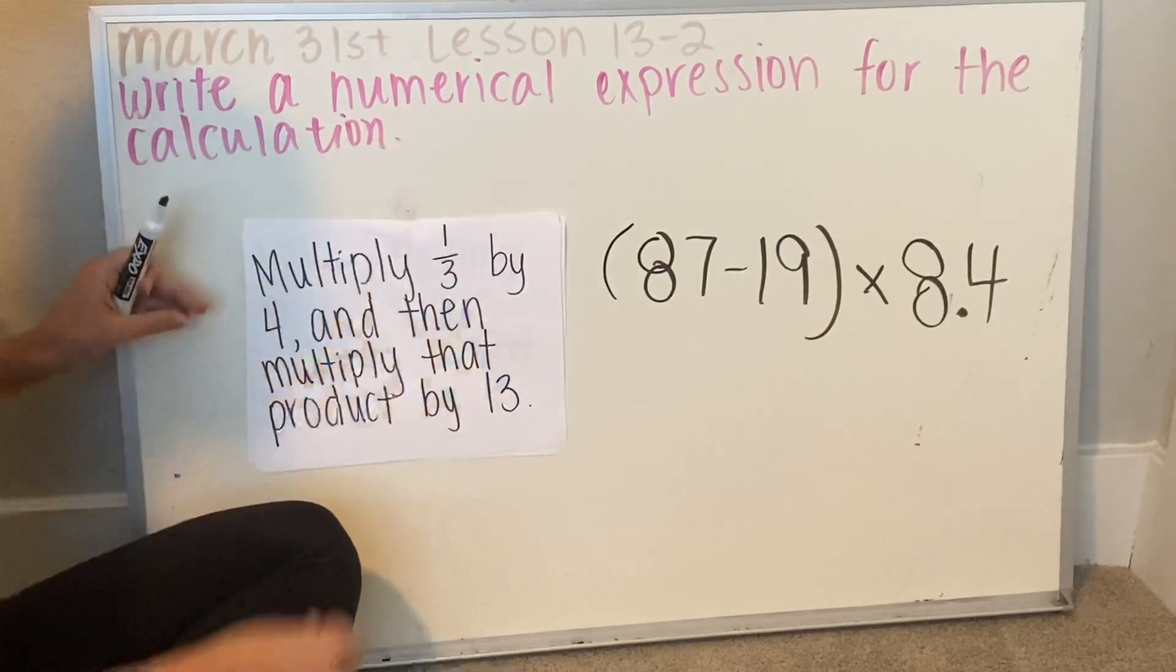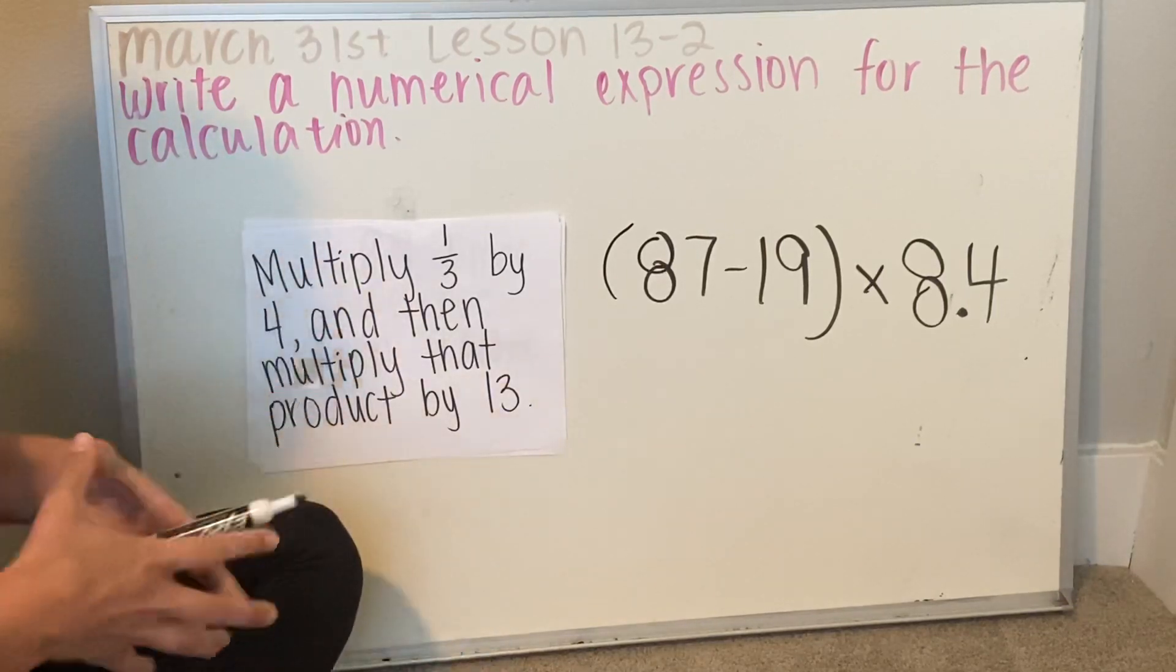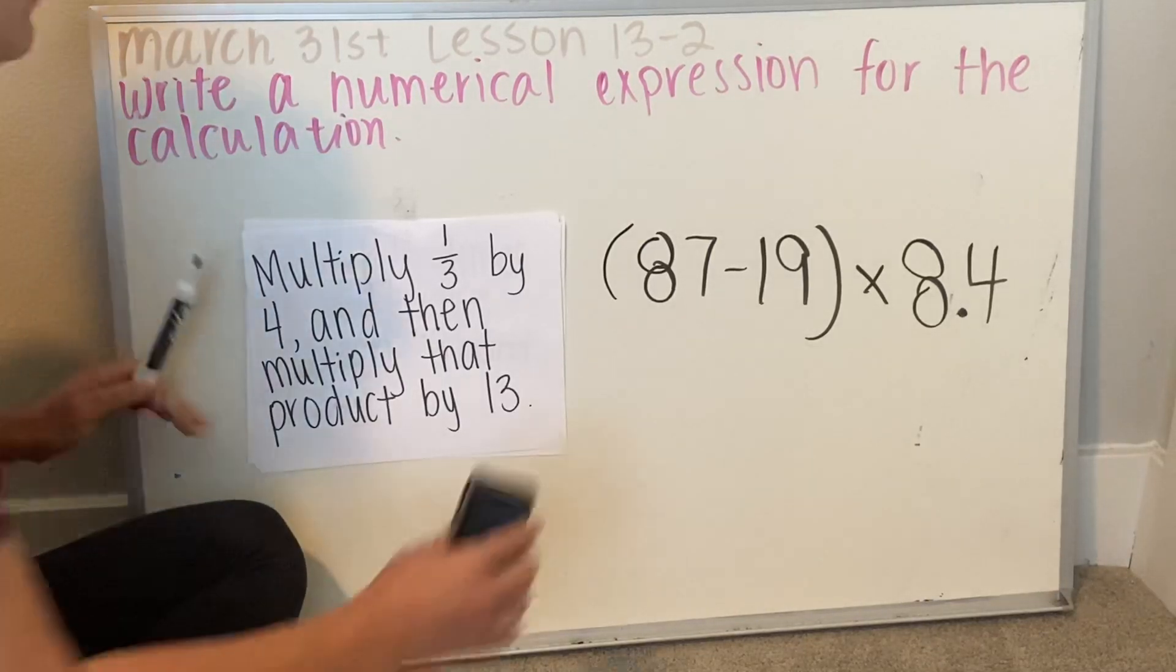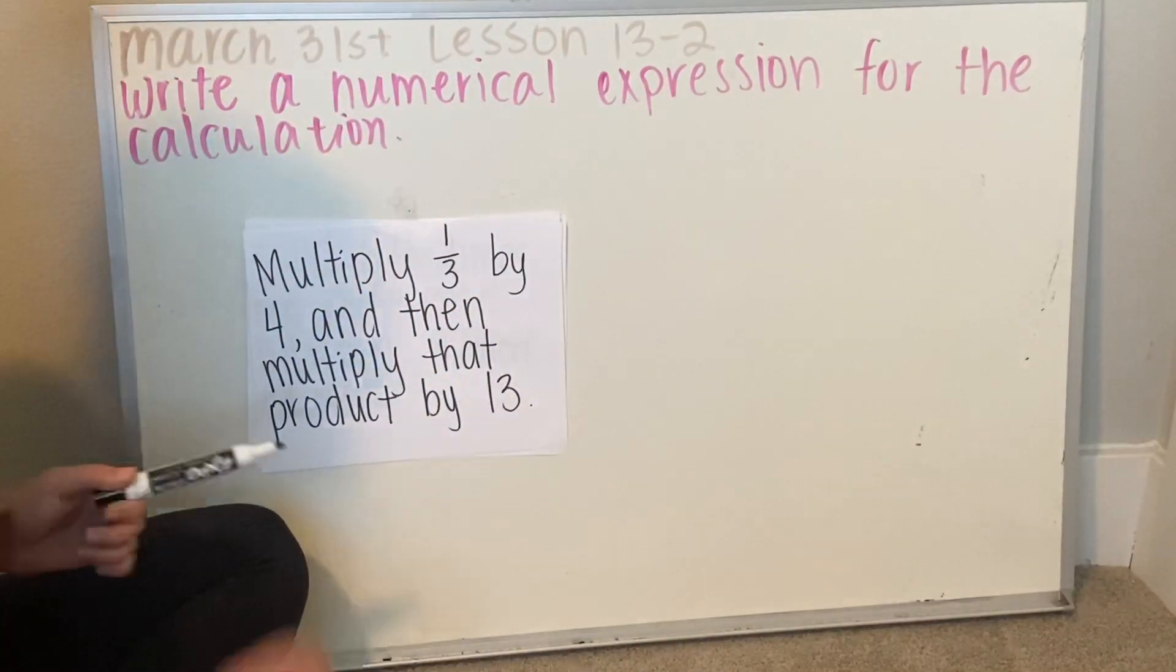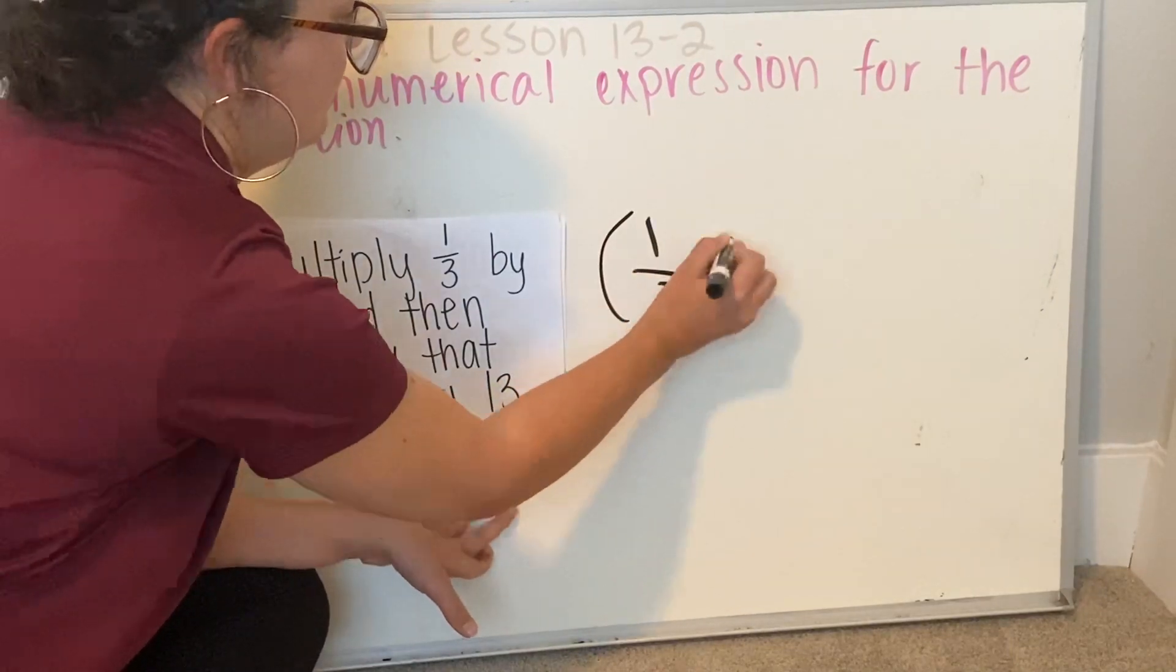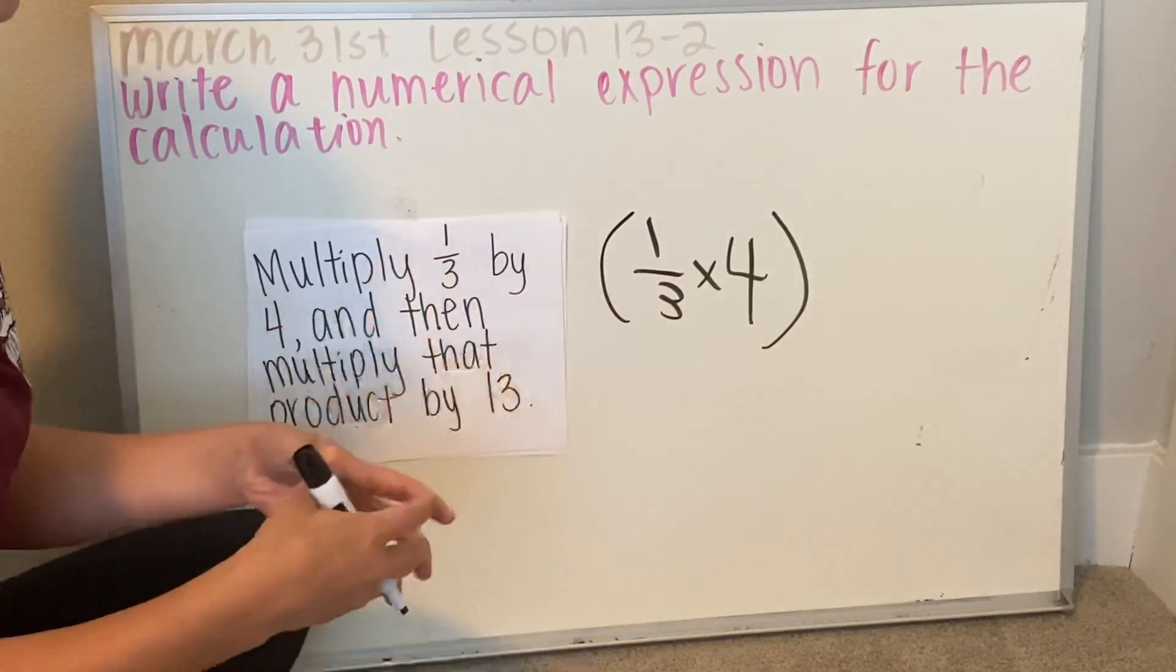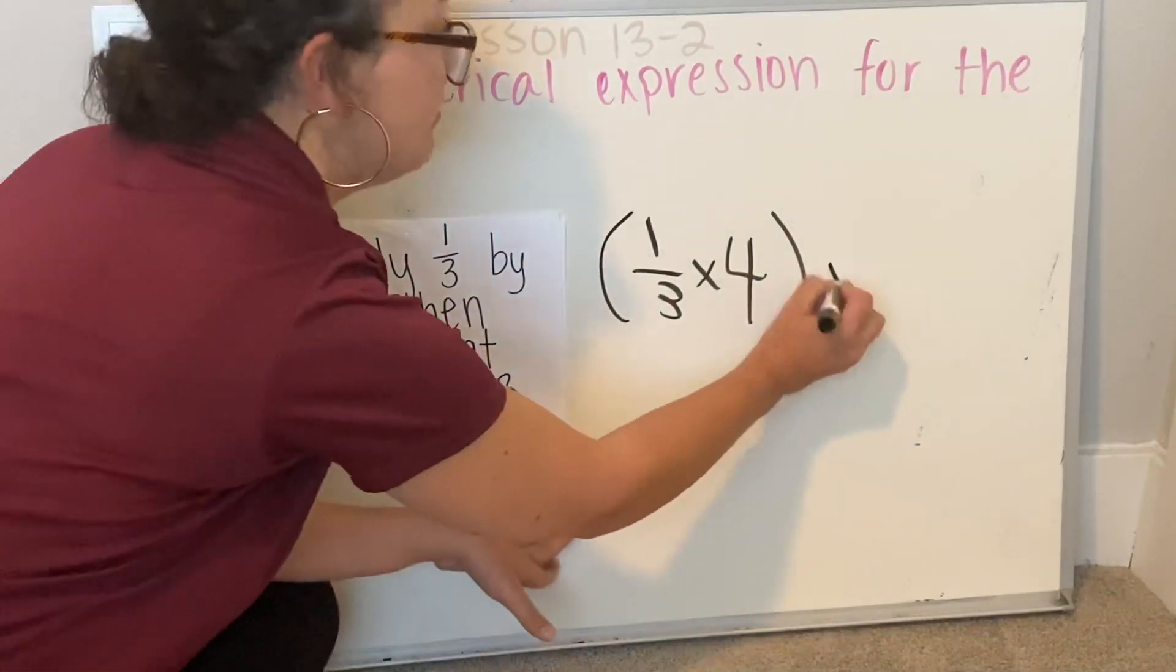This one says multiply 1 third by 4 and then multiply that product by 13. So you're going to multiply 1 third and 4. Once you find this product, which you'd have to do because in the order of operations you always do what's in the parentheses first, then you're going to multiply that product by 13.